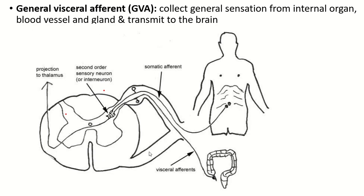General visceral afferent. This is the pseudounipolar neuron. This is the peripheral process of the pseudounipolar neuron. This is the receptor present in the wall of the viscera. Any sensory information of viscera is collected through this fiber — the general visceral afferent fiber. Both central processes synapse with the same second order neuron. So sometimes the visceral pain is poorly localized. The pain of the viscera is felt in the body wall — this is known as referred pain.